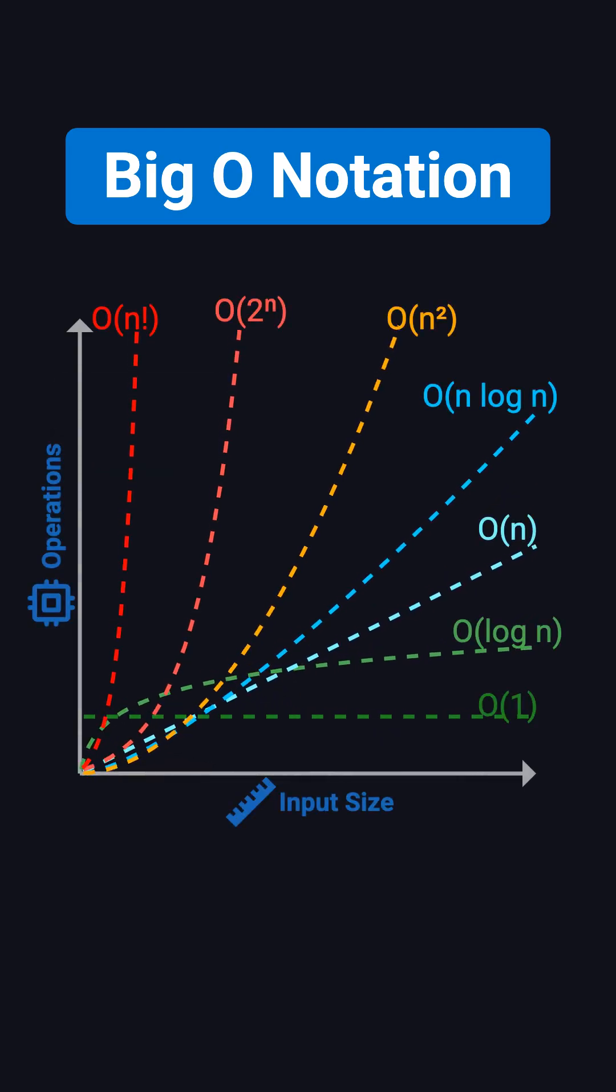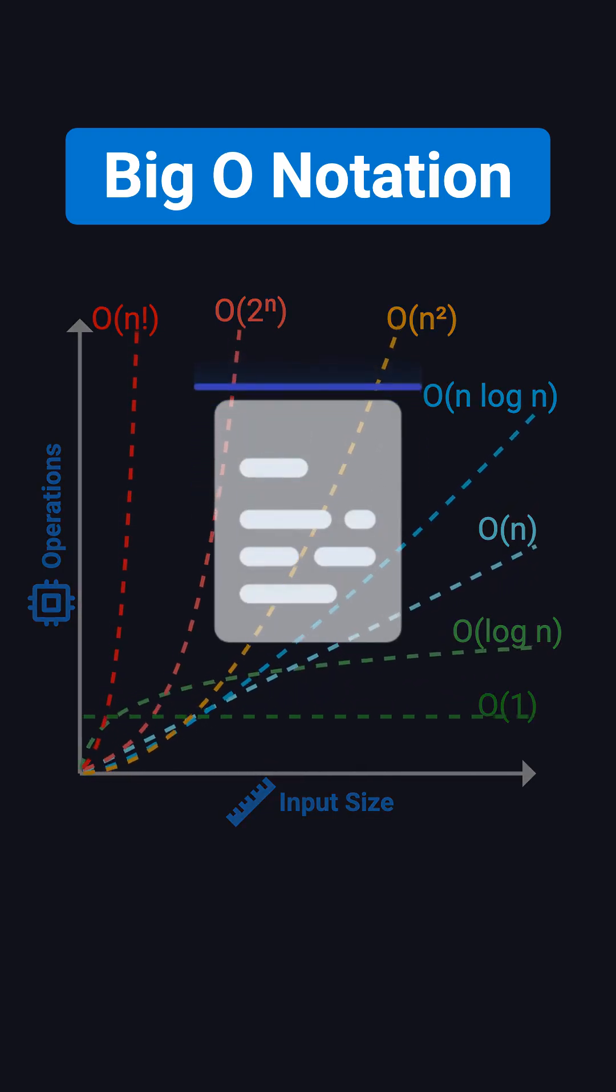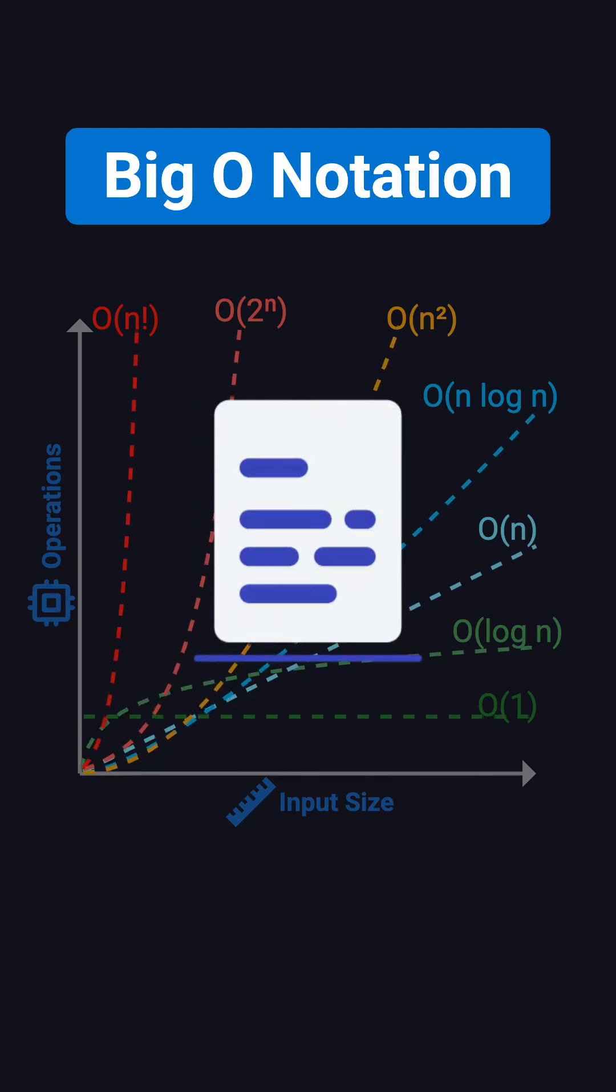Big O, on the other hand, looks at the efficiency of the algorithm structure itself. It's completely independent of hardware or operating system conditions. Think of it like taking an x-ray of your algorithm. You can see how it will behave with large amounts of data, without even running it. And that makes it incredibly valuable for spotting performance issues early.